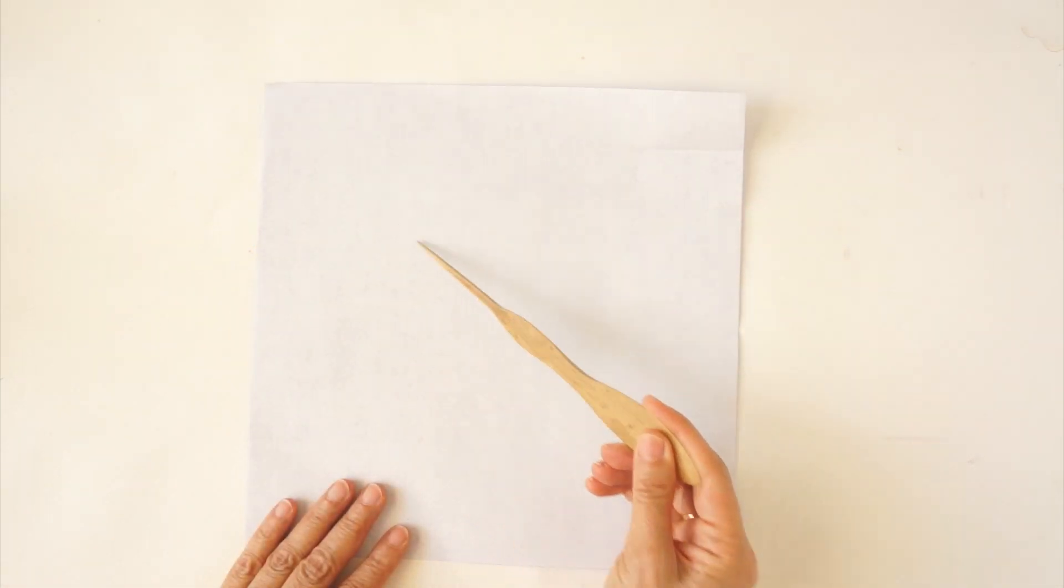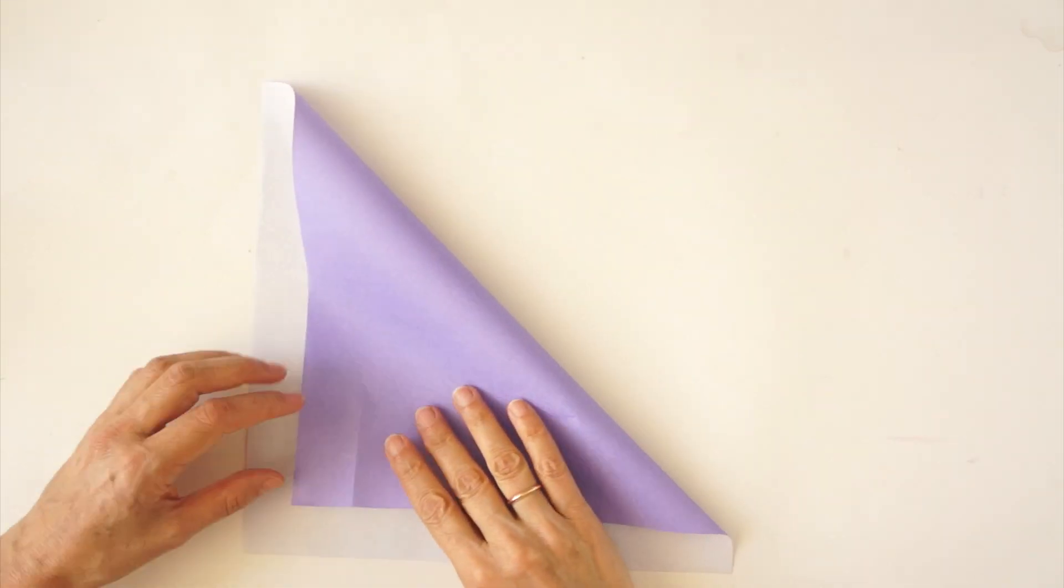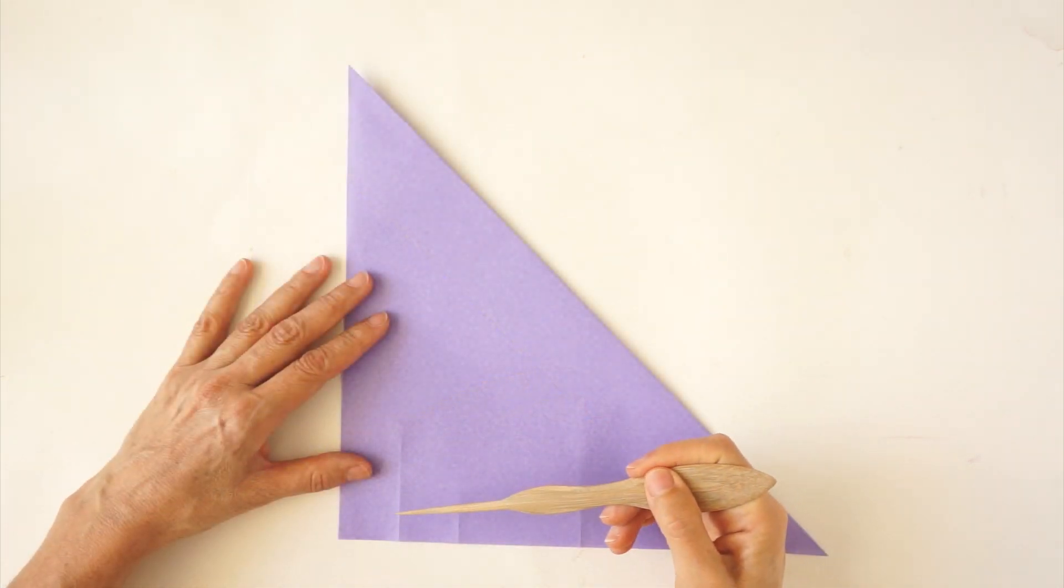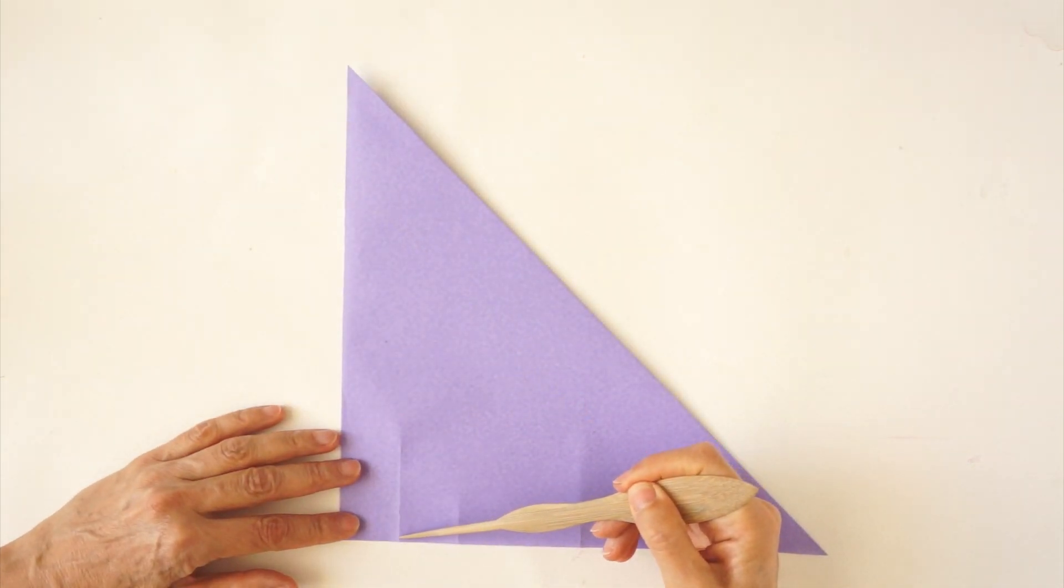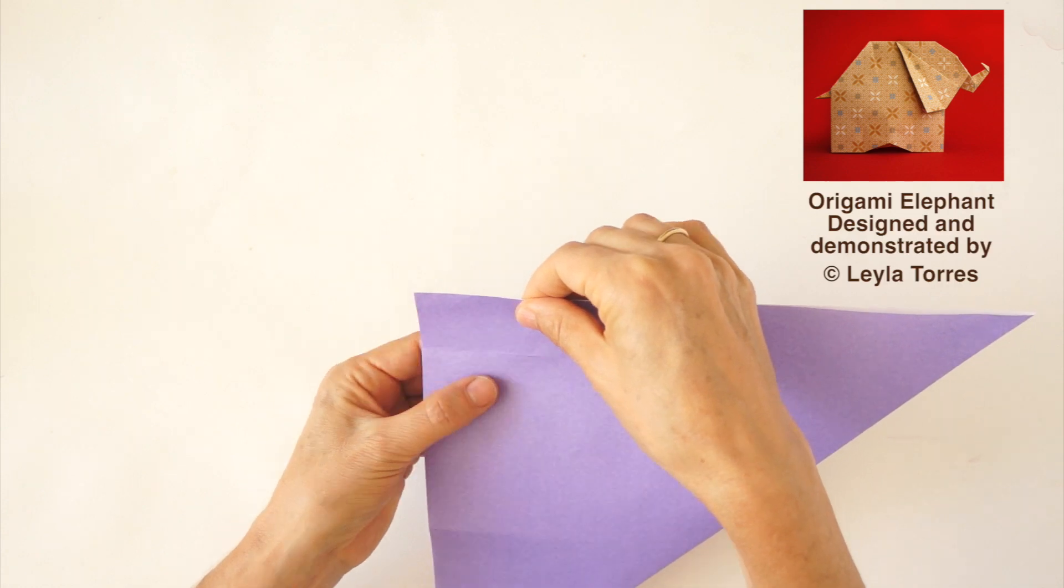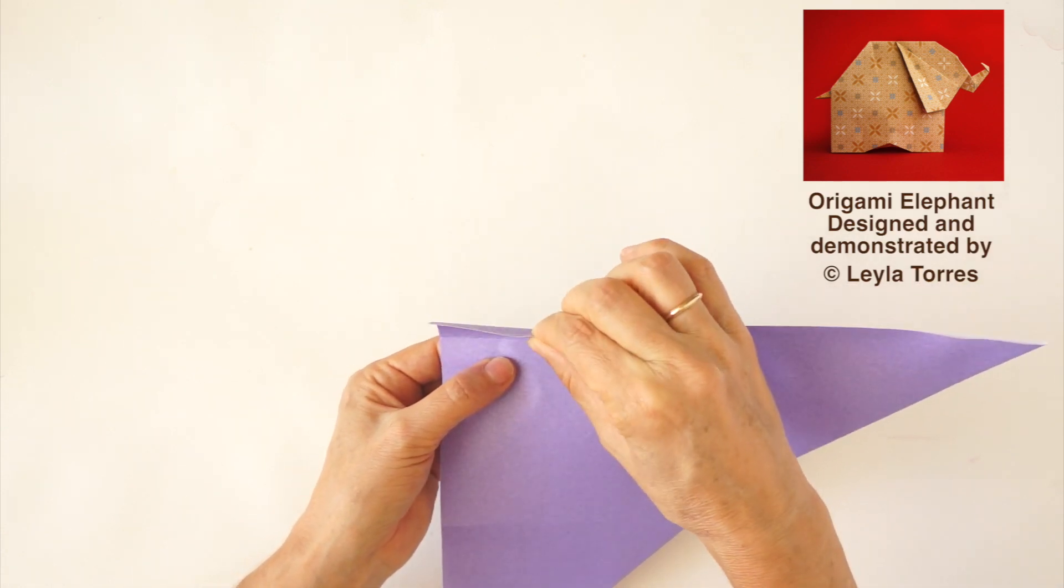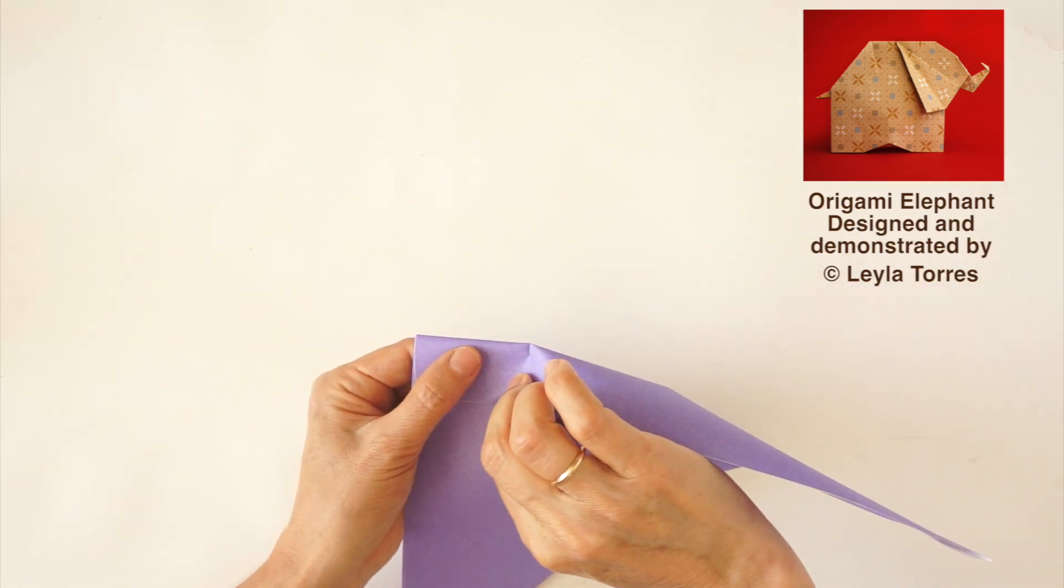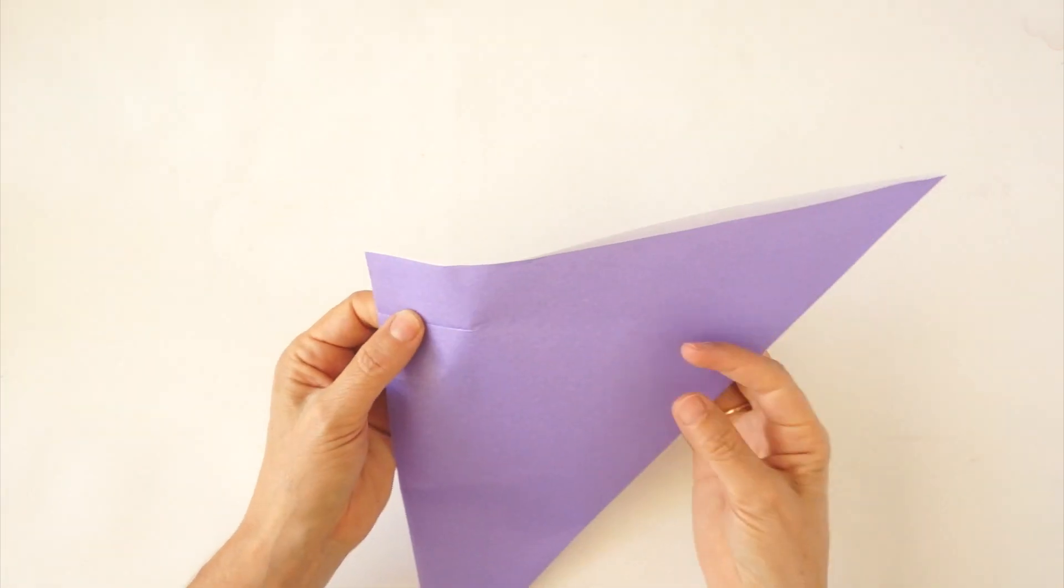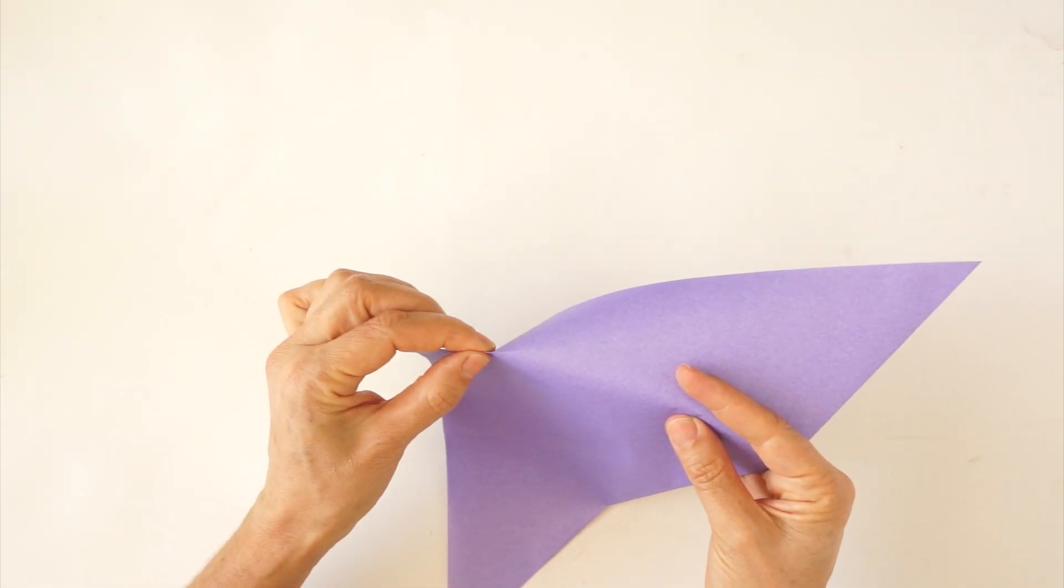This pinch mark will be much longer. Fold the paper in half diagonally. We have that longer pinch mark right here. We are going to reinforce it on both sides of the paper. Hold the layers together firmly. Fold back and forth.